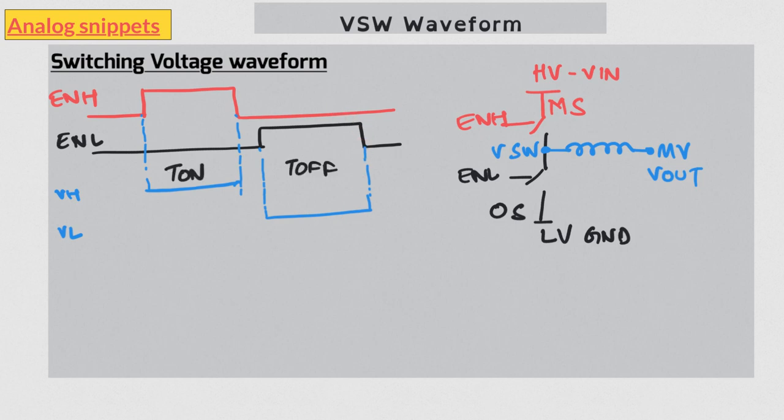The inductor current will ramp up during T_on. At the end of T_on, the high side enable switch is turned off. So at that point both switches are off, but we still have an inductor with a current in it. Recall from video number 48 that in such a situation, inductor will try to reverse its polarity. So the switching voltage will dive towards the low voltage.